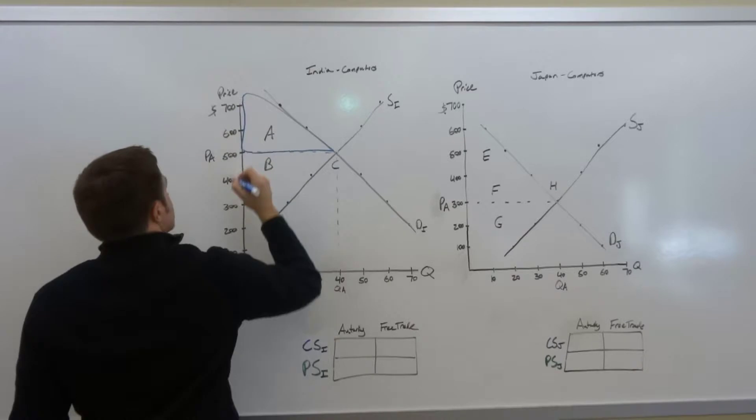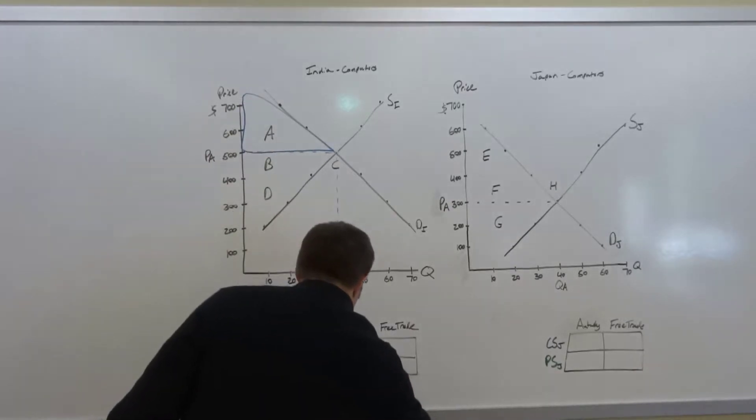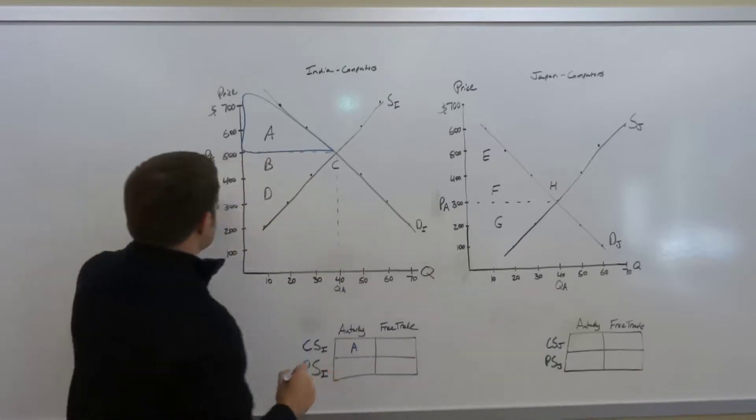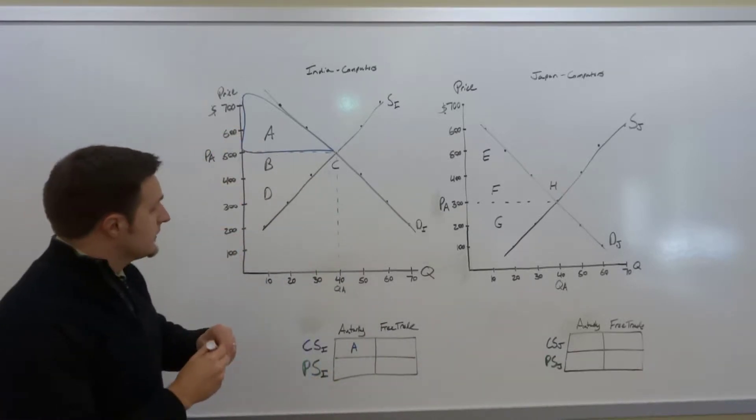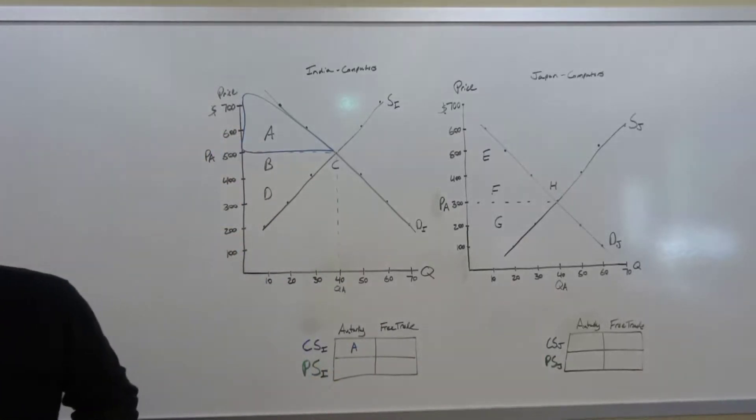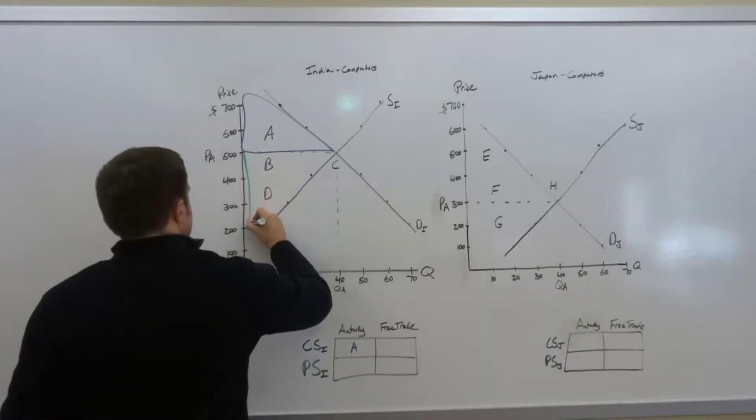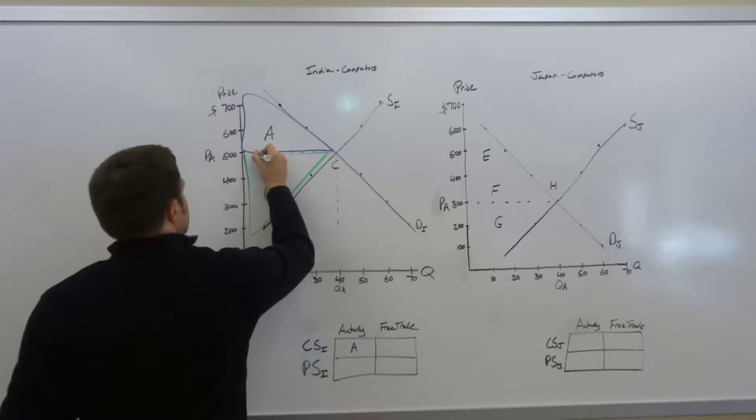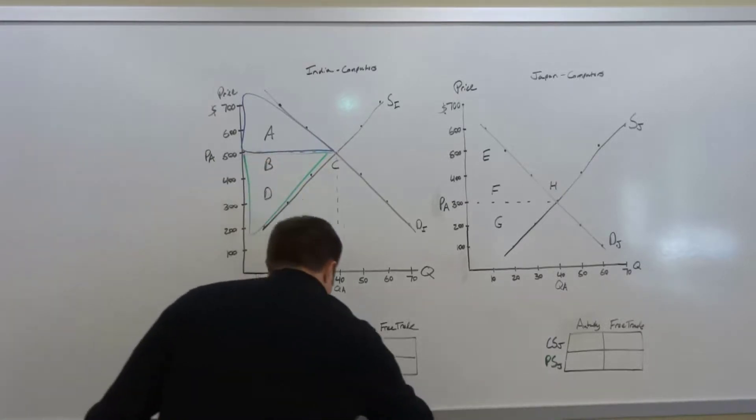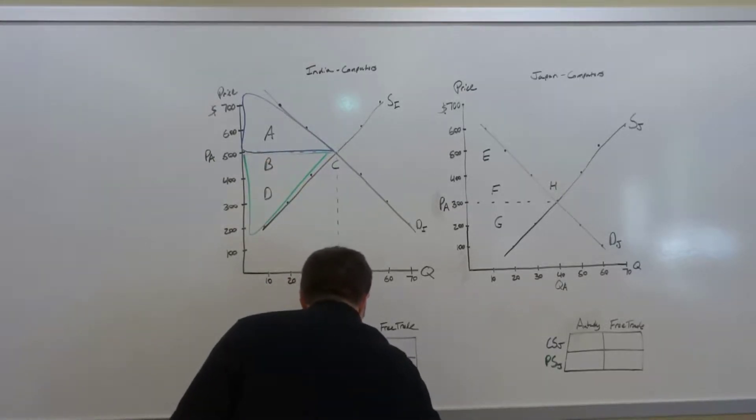Let us assume that the autarky price of $500 in India gives us a consumer surplus of area A. For the producer surplus, what you're going to see is area B and D. These areas here, area B and D.